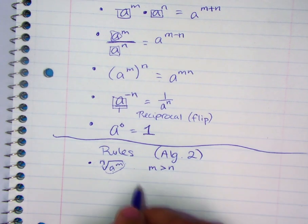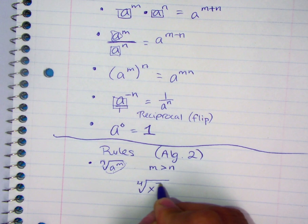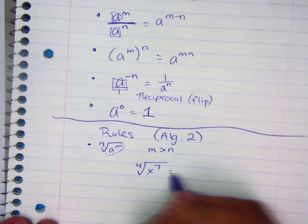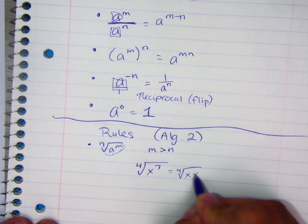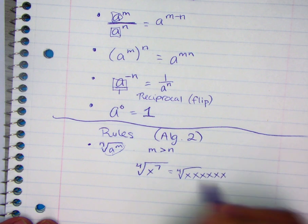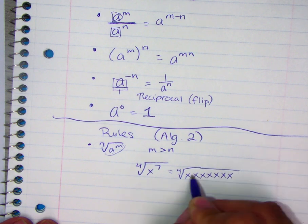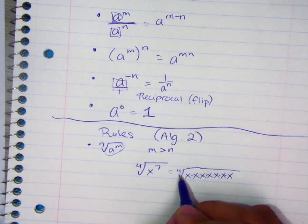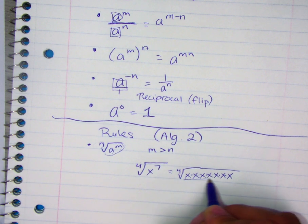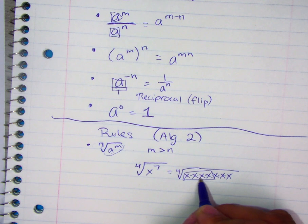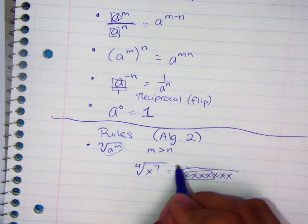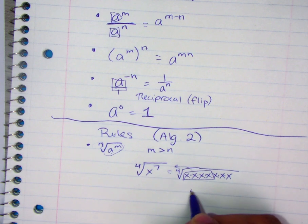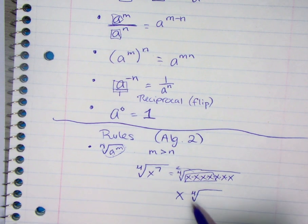An example is the fourth root of x to the seventh. You have x seven times inside, all multiplied together. When doing the fourth root, you ask: do I have the same number multiplied by itself four times? Here we have a variable multiplied by itself four times — yes — and then three remaining — no. So we can take one group out of the radical and write it on the outside one time, because we have one group, with three x's left on the inside.